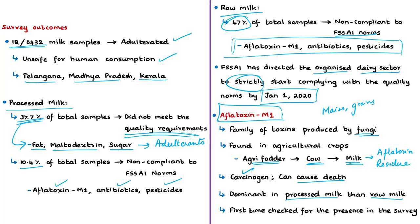The states and union territories where aflatoxin residues were found the most are Tamil Nadu, Delhi, and Kerala. Aflatoxin M1 comes into milk through feed and fodder, which are currently not regulated in India. It is for the first time that such a detailed survey of this residue in milk has been done in India. According to the CEO of FSSAI, there is no proper lab to test aflatoxin M1 residues in India, and initiatives are being taken to invest in testing machines that can detect the residue.